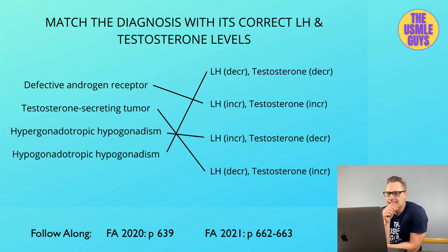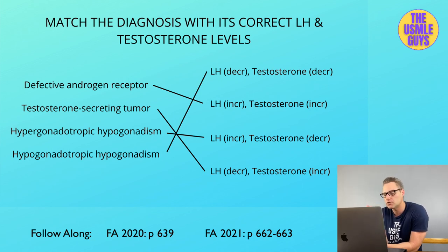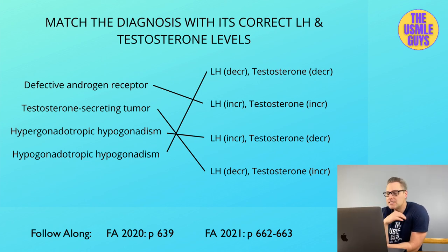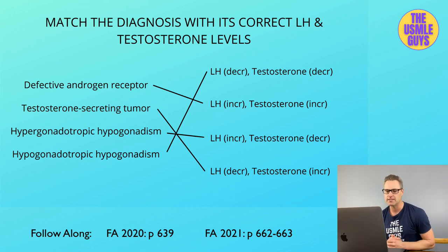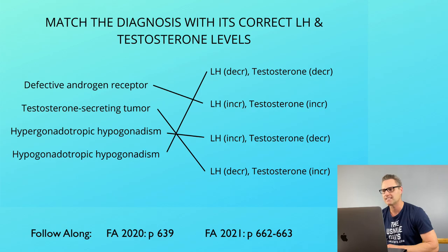The last condition is placental aromatase deficiency, characterized by the inability to synthesize estrogens from androgens. This results in masculinization of a female infant — they will have ambiguous genitalia as well as increased levels of testosterone and androstenedione. During pregnancy, virilization of the mother can also occur because androgens can cross the placenta. All right, let's end this lecture here — come on back when you want to jump into the next lecture.